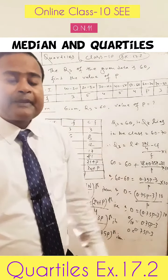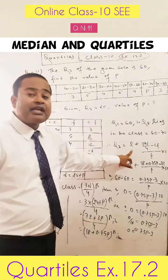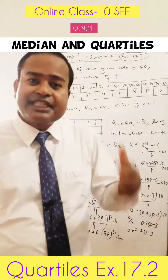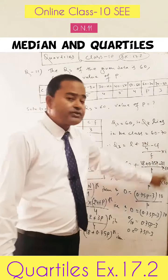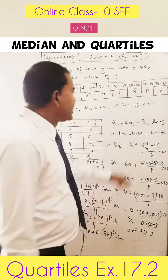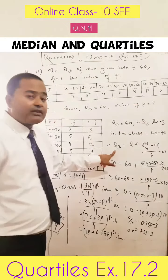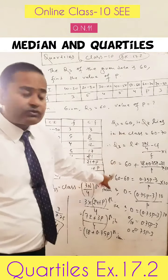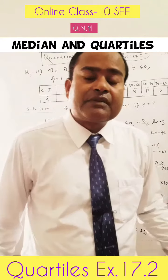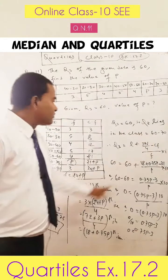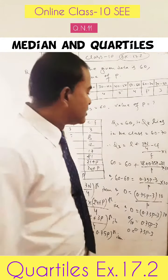Now let's use the formula for the third quartile. In case of continuous series, the formula is: Q3 = L + (3N/4 − CF) / F × I. By putting the respective values, we will get the value of P — the frequency of the class interval 60 to 70. Q3 is 60. L means the lower limit of the quartile class. Since the third quartile class is 60 to 70, L equals 60.